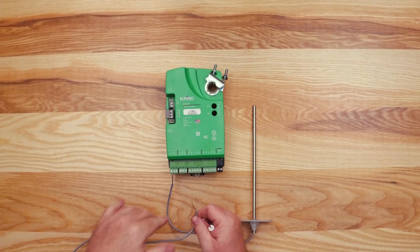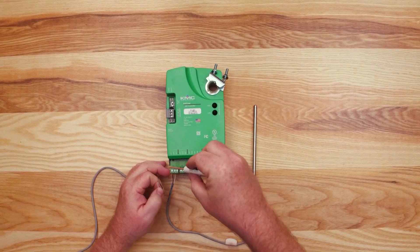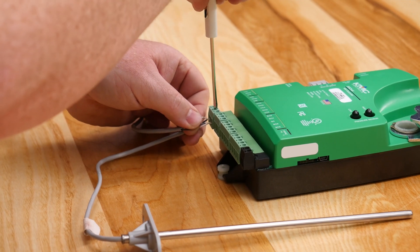The common wires for inputs in the same terminal block can be grounded together in the same terminal. Thus, the common wire for UI4 can go into the same ground terminal as UI3.